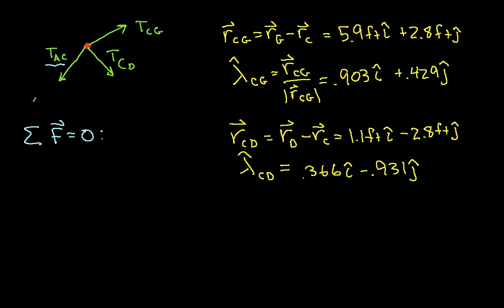So I can write then the force that's actually exerted, if I write this as the force and not just the magnitude of the force, this force here will be negative T_AC, okay, plus T_CD lambda_hat CD, plus T_CG lambda_hat CG, and this is equal to zero.